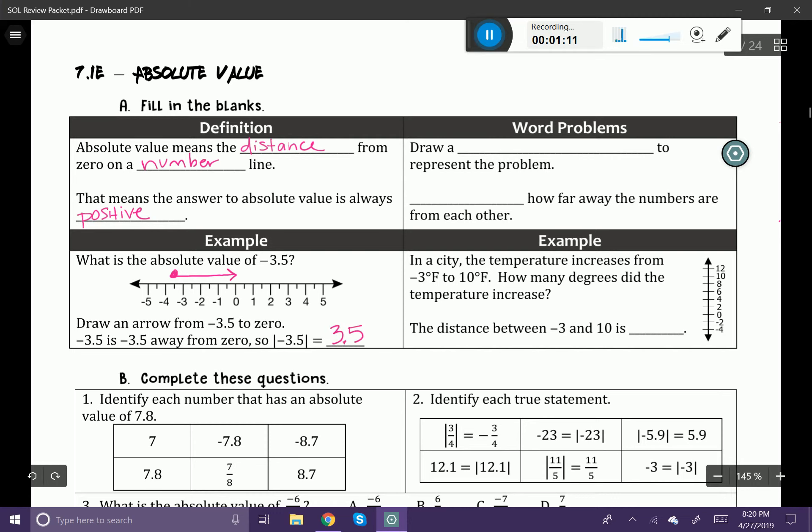Remember that distances are always going to be positive. So no matter which direction your arrow is facing, absolute value, no matter what, is going to be positive. You can also see that absolute value is represented by these little bars right here. So anytime you have a number that's inside the bars, that just means it's asking you for the absolute value.